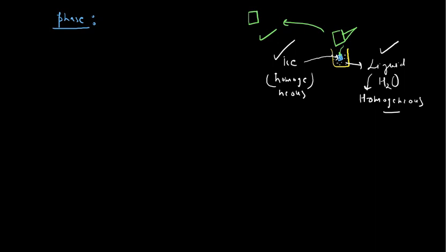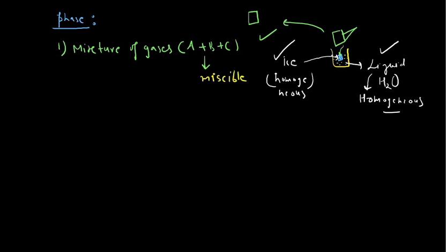How do we calculate the number of phases? For example, you have been given a mixture of gases — say gas A, gas B, and gas C — and you mix them all. They are miscible or completely soluble. When they are miscible, they form only one phase. Though there are three different gases, they are completely miscible and all in the gaseous state. The number of phases is one because you cannot separate gas A from gas B and C mechanically, and they will not have their own boundary since they form a miscible mixture.